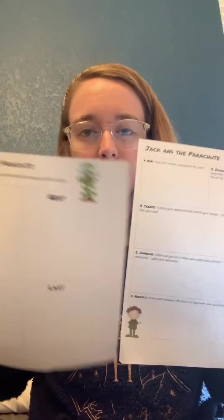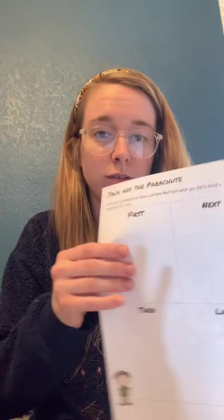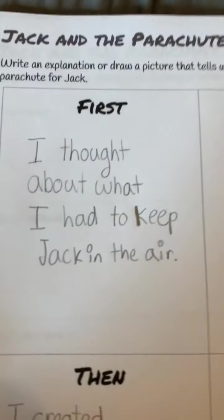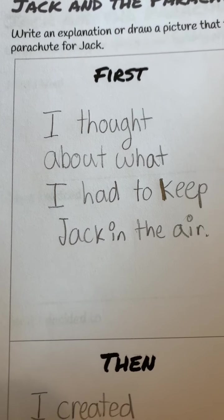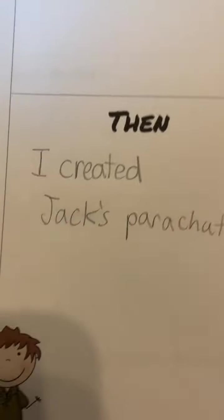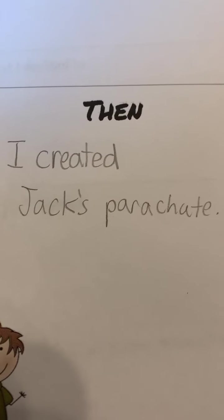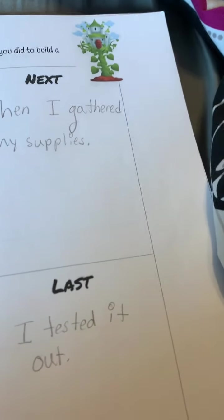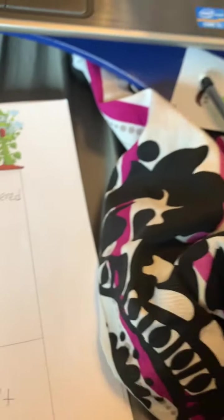So I can do one of these papers — I can do all of them, but I'm just going to do this one to save time. First, I thought about what I had to keep Jack in the air. Next, I gathered my supplies. Then, I created Jack's parachute. Last, I tested it out. And sadly, poor cat Jack — it was not a success for him.